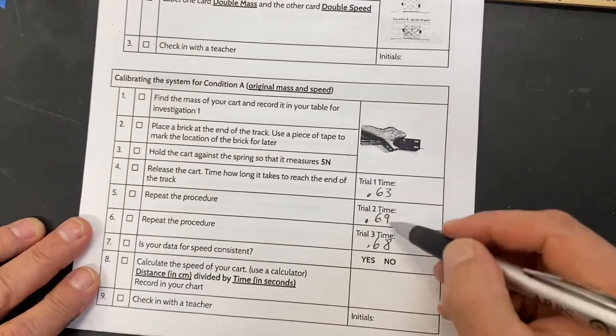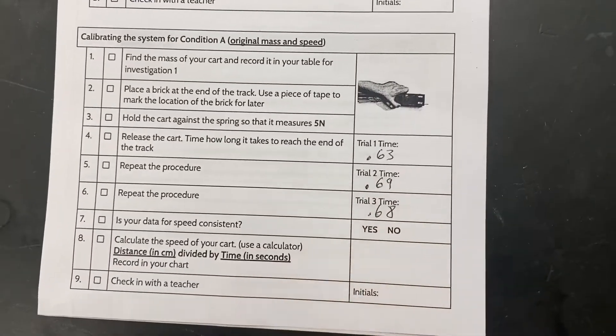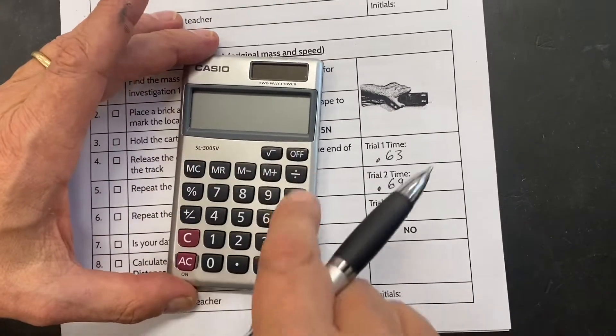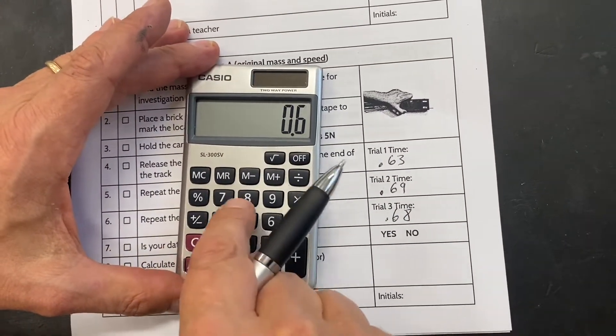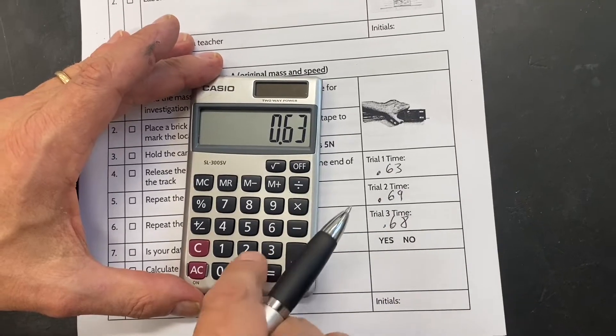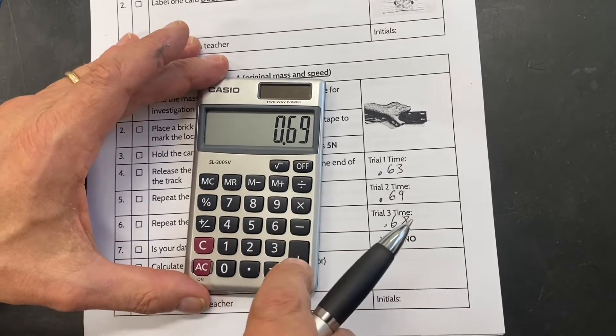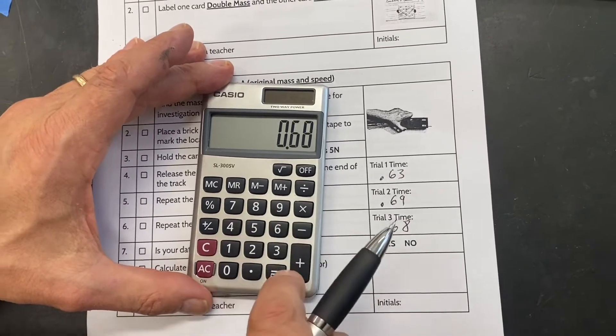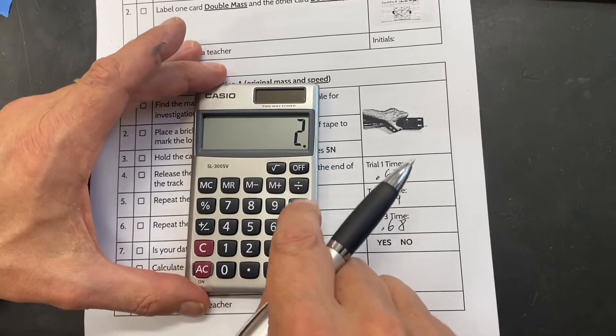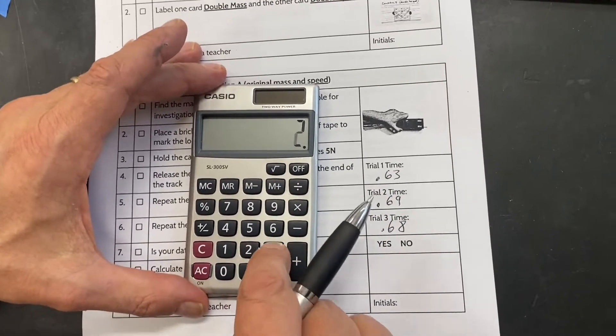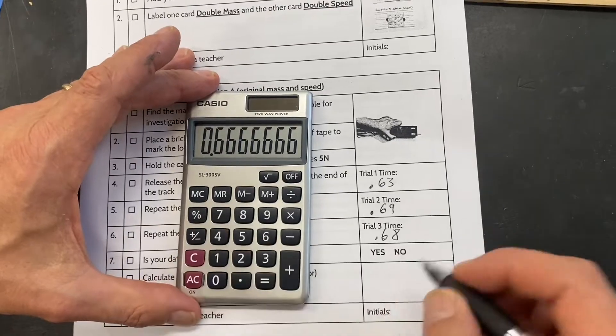So now we are going to average those. The way we get an average is we add up the three times that we had. So 0.63 plus 0.69 plus 0.68 and we equal that together. It turns out to be two. Now we're going to divide that by three and we get 0.67.